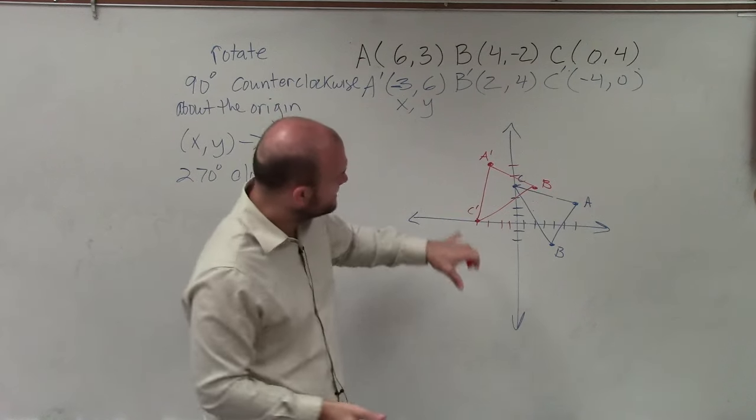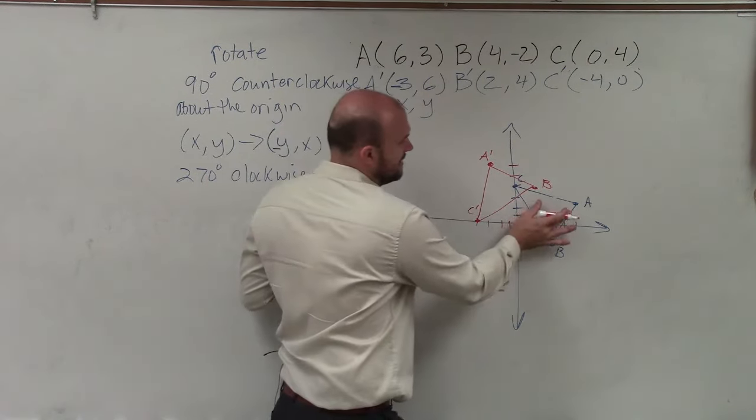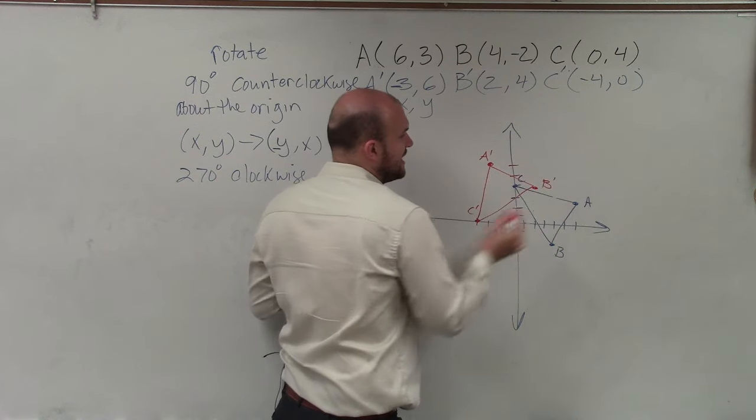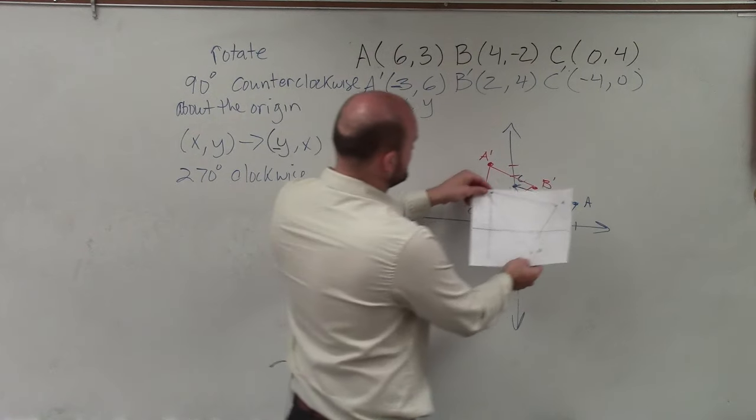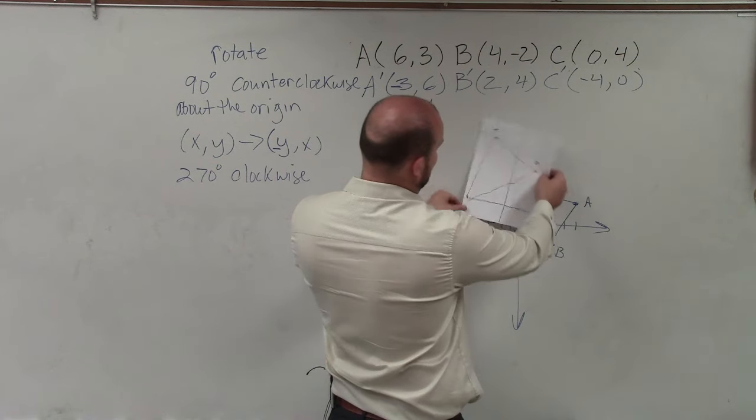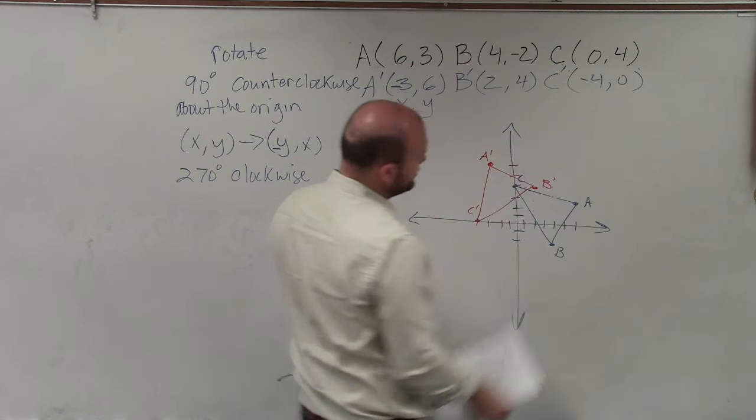By rotating this 90 degrees counterclockwise, this is my pre-image, and here's my new image. Let's compare that to what I did on the sheet of paper. I originally had the graph like this, and by rotating it 90 degrees about the origin, it looks like this, which you can see.